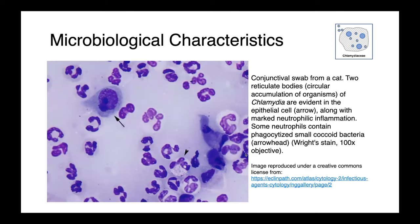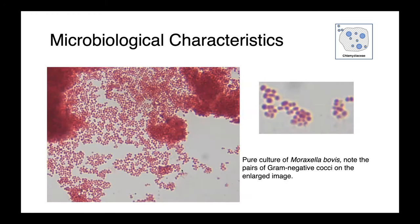In this image here, you can see a cytological preparation of a conjunctival swab from a cat. This cell up here shows reticulocyte bodies — these clusters of more basophilic structures. Below that and to the right, indicated by this arrowhead, you can see coccoid-shaped organisms intracellularly within a neutrophil. Here you can see a pure culture of Moraxella bovis — these are gram-negative cocci, and in the highlighted image on the right, you can see they commonly cluster together as pairs, forming diplococci.